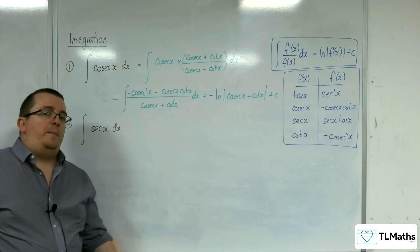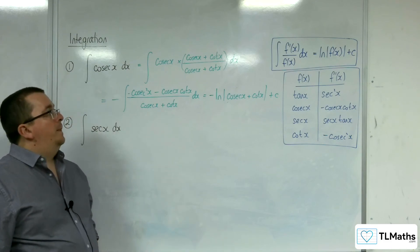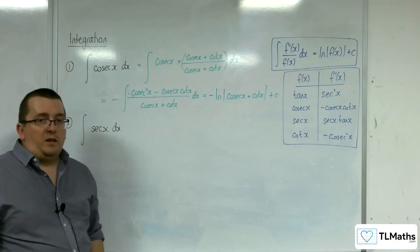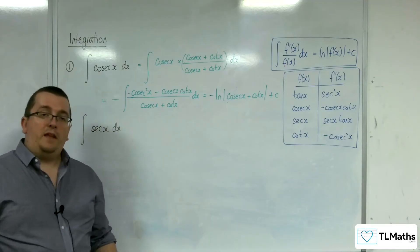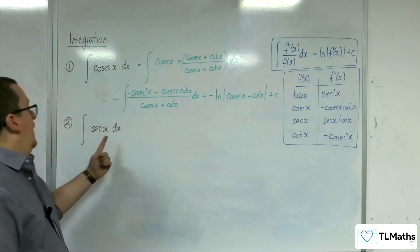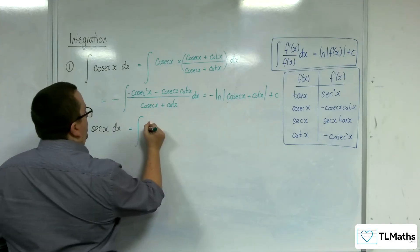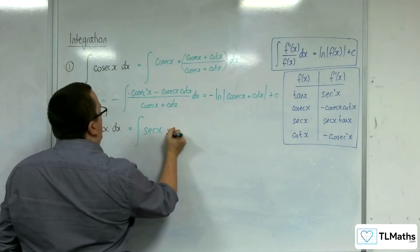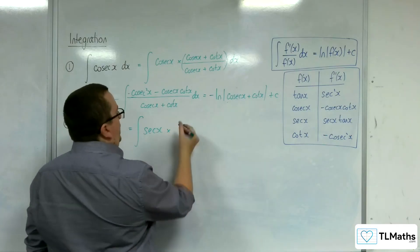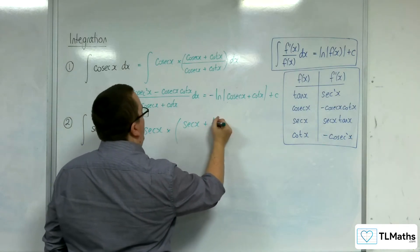It looks like it's coming out of nowhere. And the reason why we do that is because, as I said, it works. So we're actually going to make a very similar trick for sec x. So I'm going to multiply by 1 again. This time, I'm going to multiply top and bottom by sec x plus tan x.